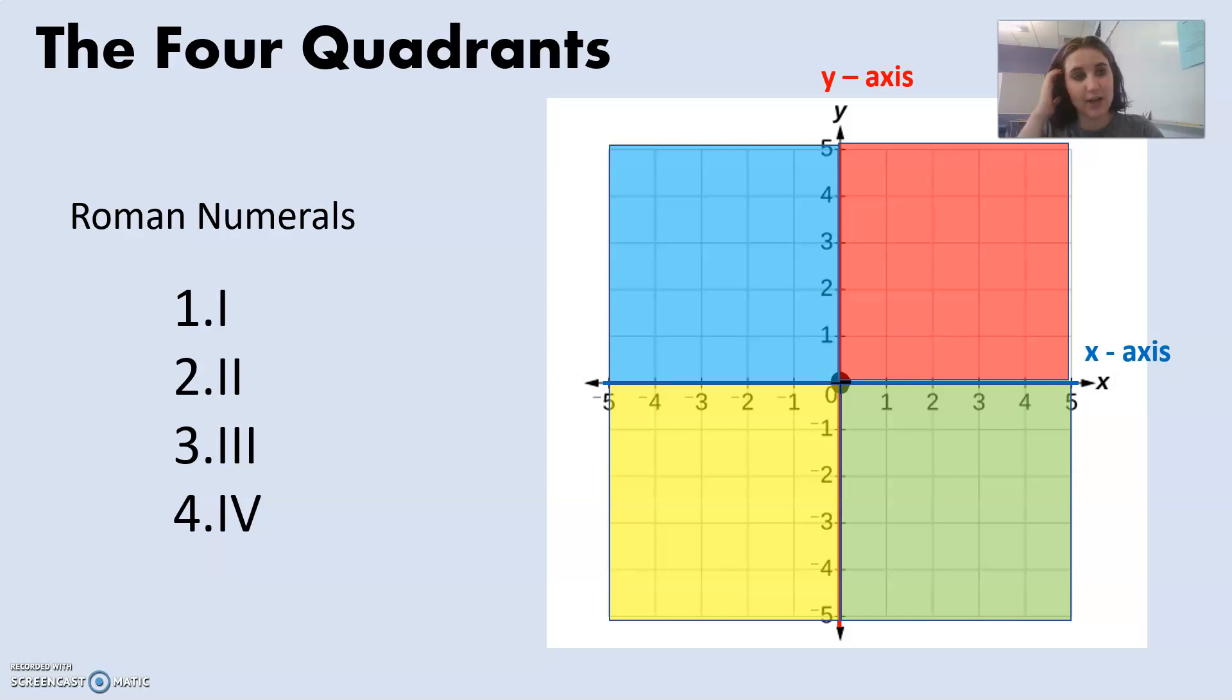When you see the quadrants, they are commonly referred to or named by Roman numerals, which is just a different way of writing numbers. So in Roman numerals, one is just like one mark, or it's kind of like an i, it's one i. And quadrant one is when all of my values are positive, when x is positive and y is positive.